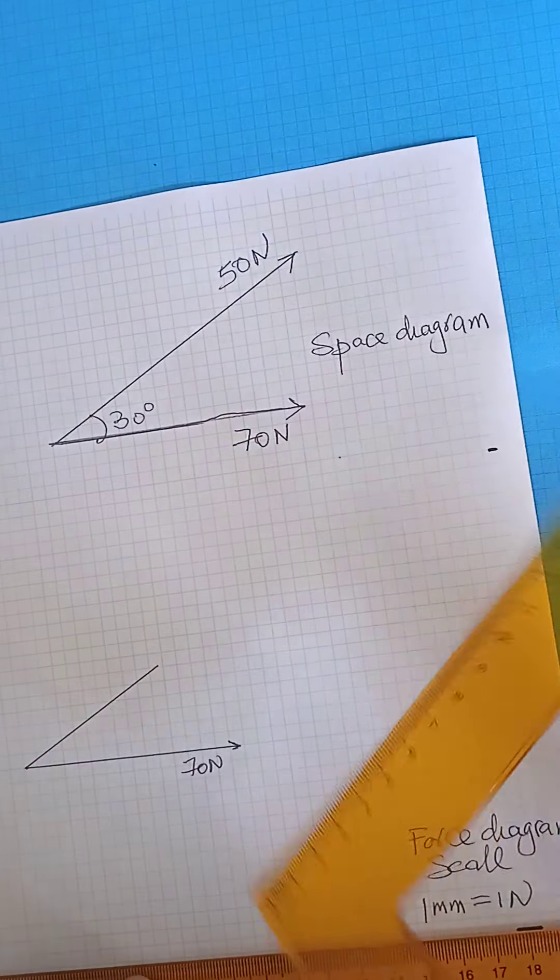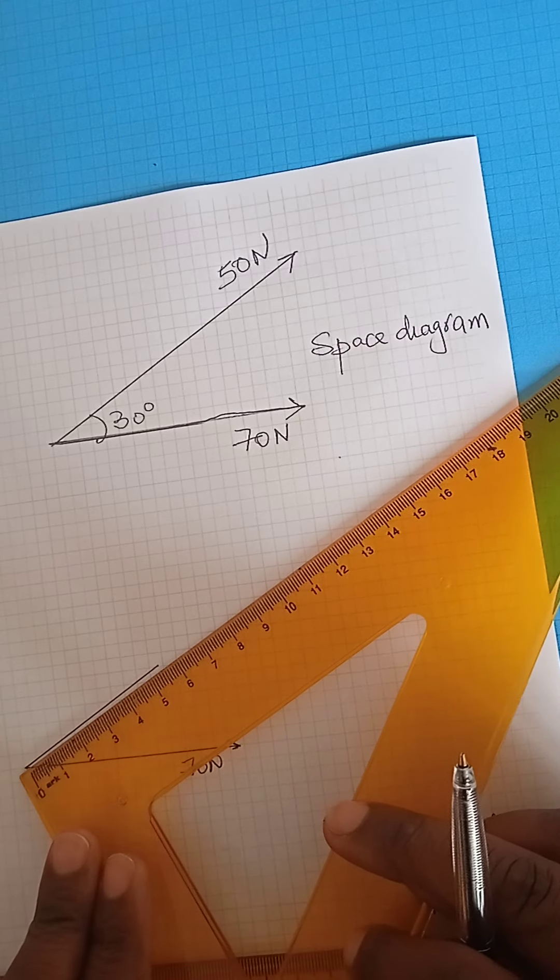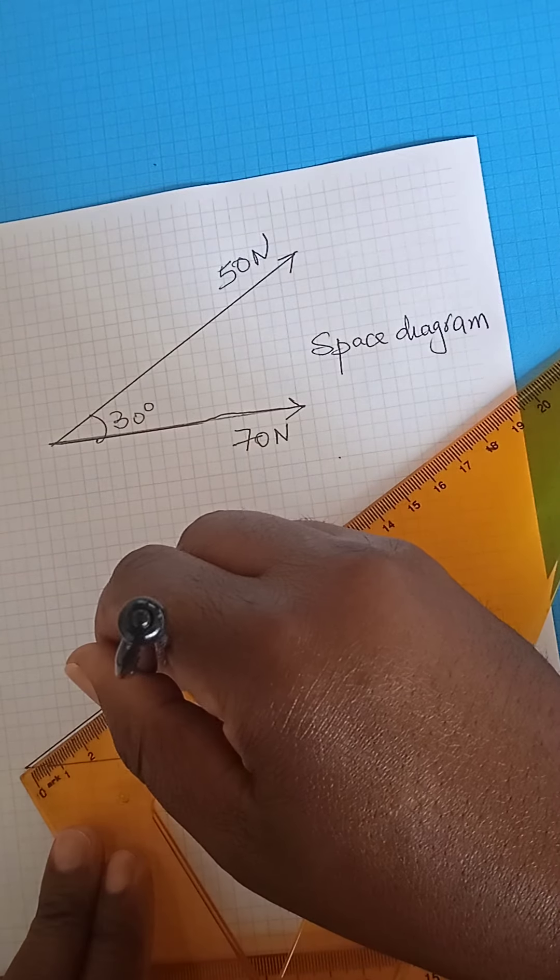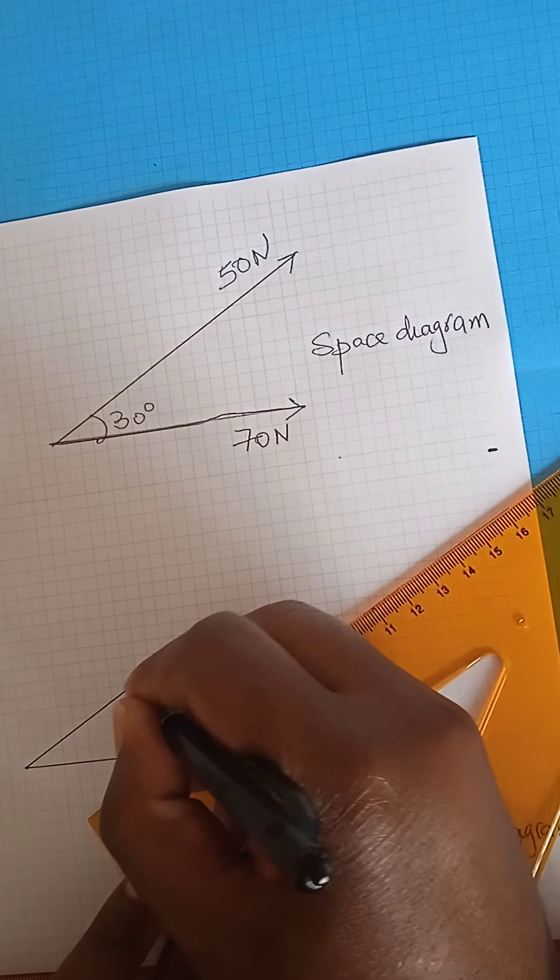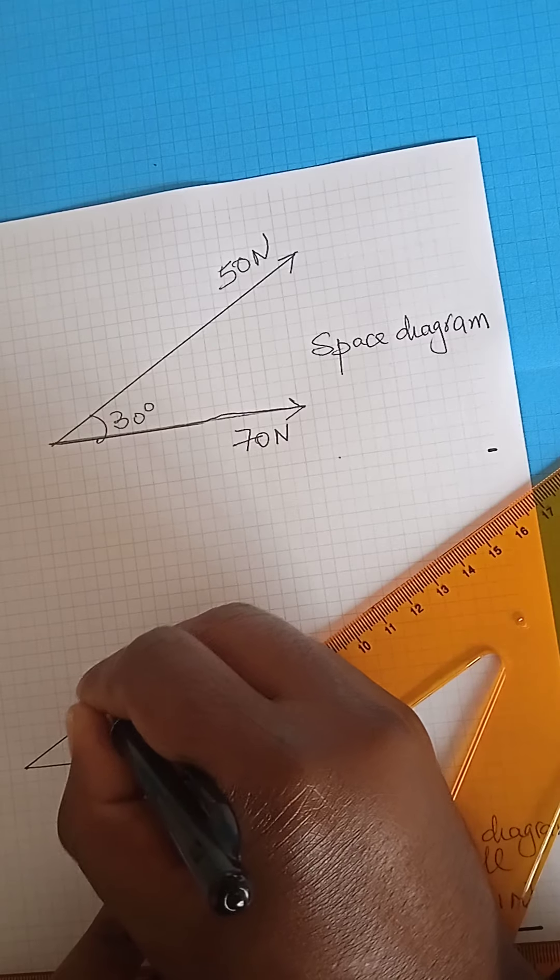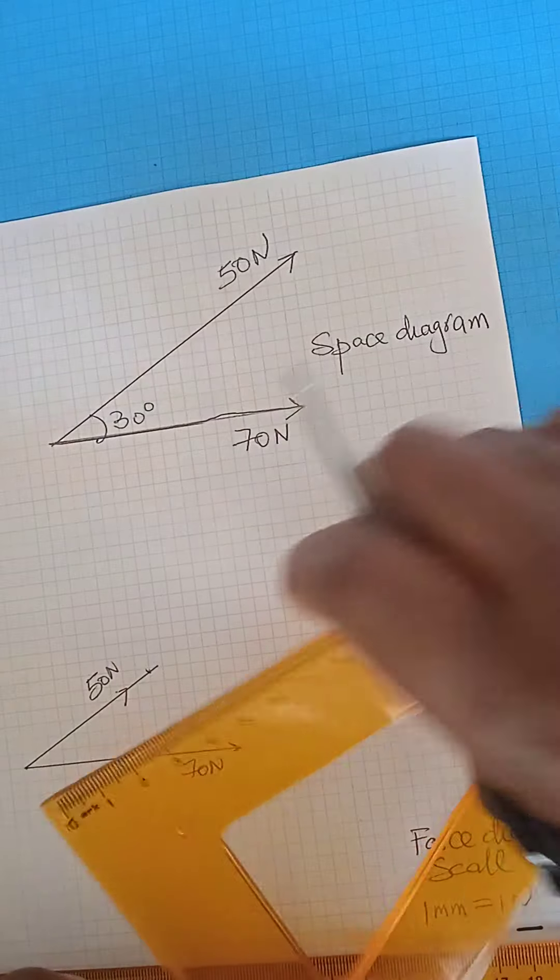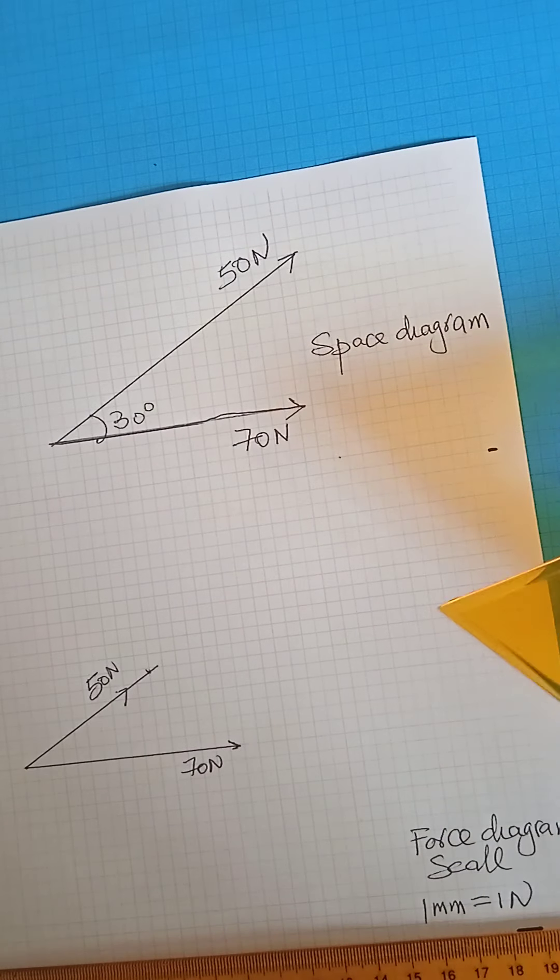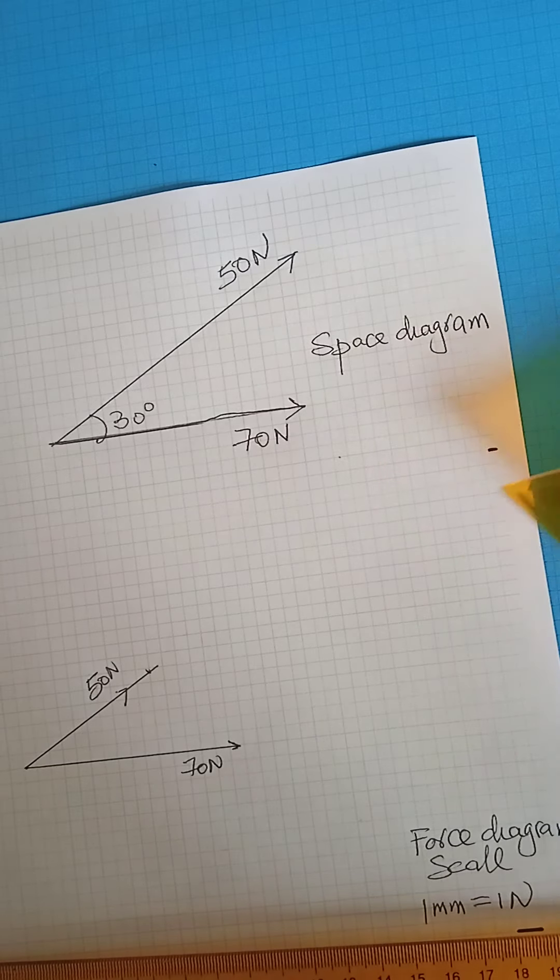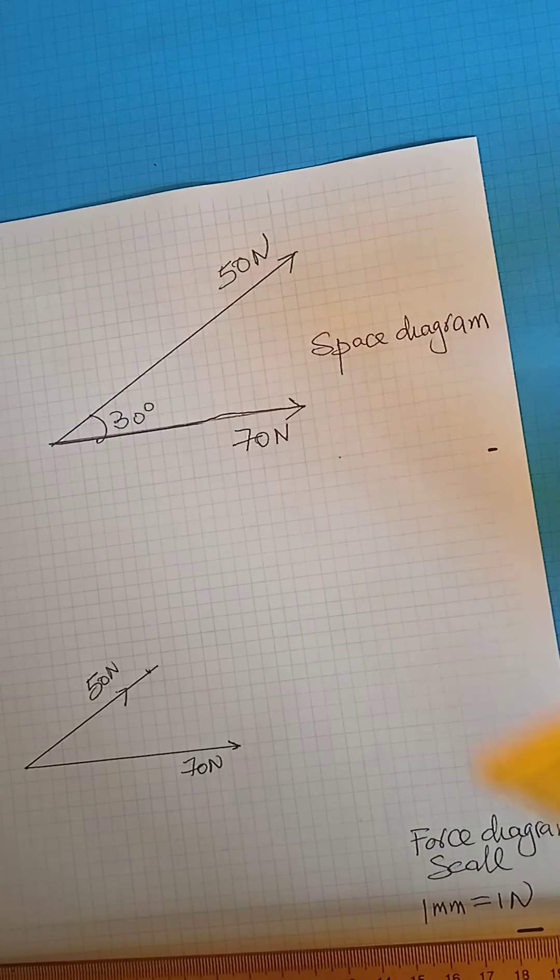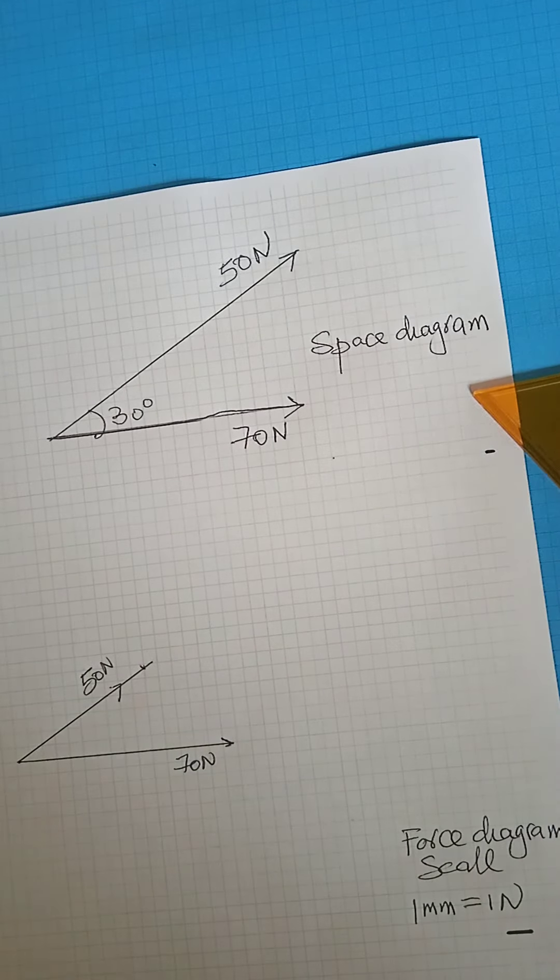And that line is 50 Newton, meaning it has to be 50 millimeters. There is my 50 millimeters. You now then complete a parallelogram using those two sides. Already you can see that we have two sides of the parallelogram. What we just need is to complete the parallelogram using your 60 squares.